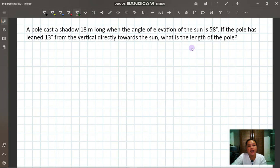Let's read the problem. A pole casts a shadow 18 meters long while the angle of elevation of the sun is 58 degrees. If the pole has leaned 13 degrees from the vertical directly towards the sun, what is the length of the pole?